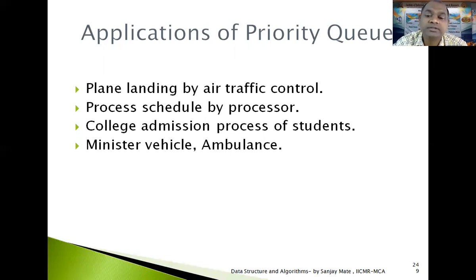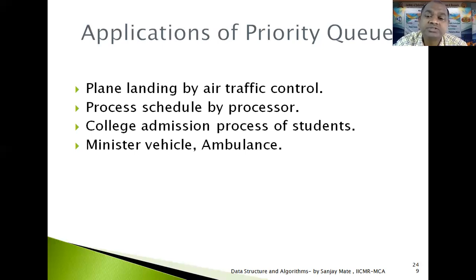In admission, those who are having the maximum marks are given priority — that is also one type of priority queue application. For processors, there is also a priority in process scheduling. Garbage collection is where less priority is assigned. These are the types of examples we can consider for the priority queue.